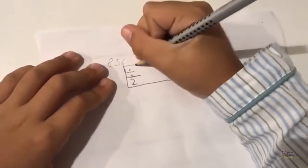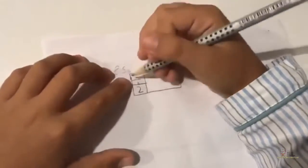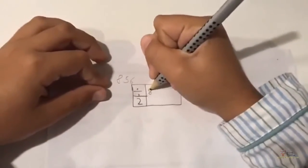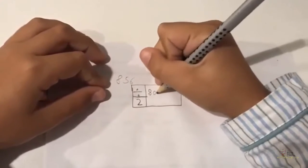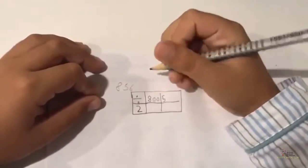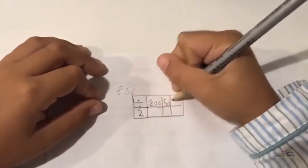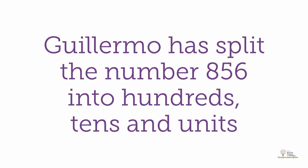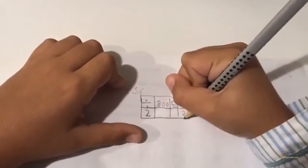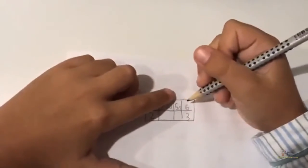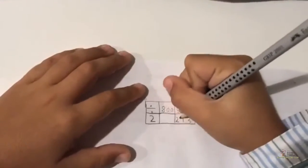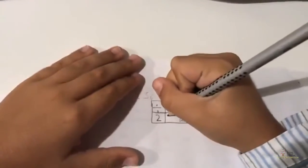I'm using a method to find what 856 divided by 2 is. So 800 in this box — what would 6 be divided by 2? 3. 50 divided by 2 is 25, and 80 divided by 2 is 40.